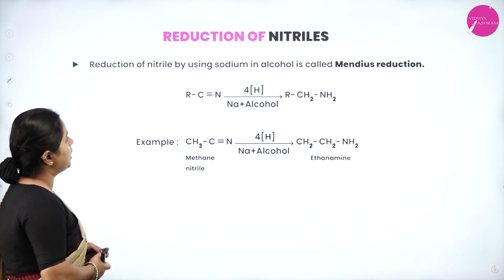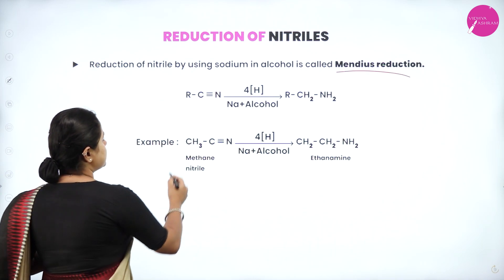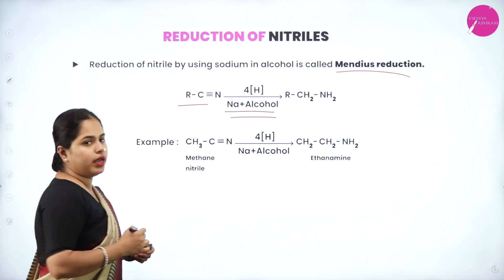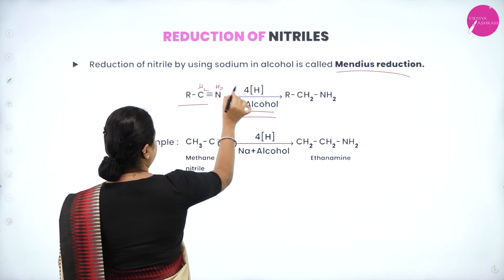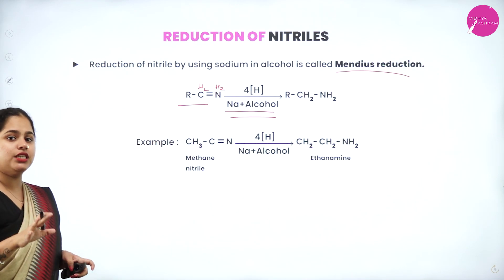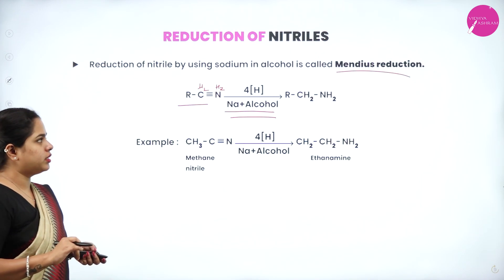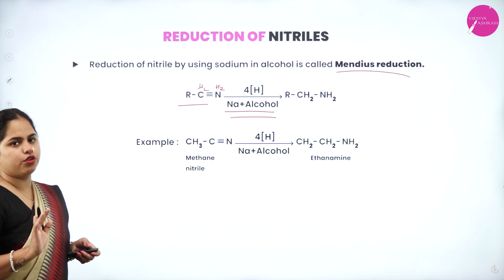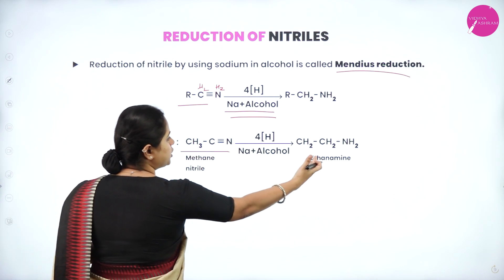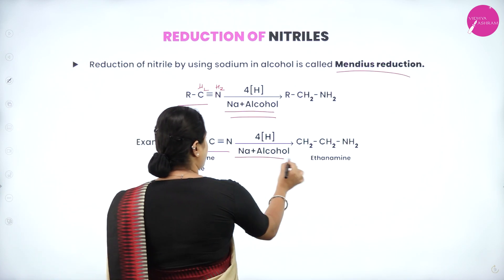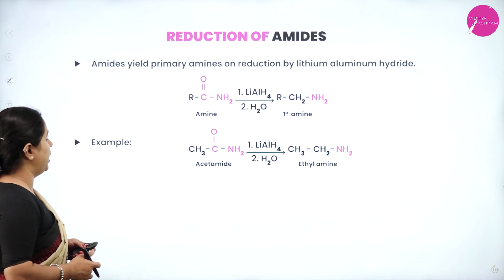Reduction of nitrile using sodium in alcohol is called the Mendius reaction — an important named reaction. The same product R–CH₂–NH₂ is obtained, but the reagent is sodium in alcohol instead of hydrogen over nickel. For example, CH₃–C≡N treated with sodium in alcohol gives ethanamine. The difference from catalytic hydrogenation is only in the reagent used.